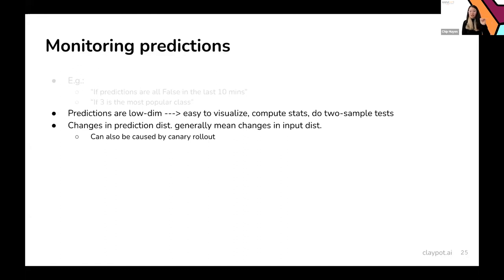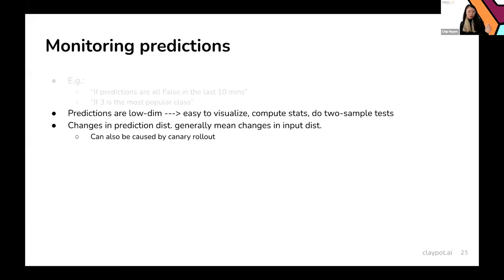Keep in mind that prediction distribution shifts can also be caused by canary rollouts — when you gradually roll out a new model to more users, starting at 1%, then 10%, then 90%. As the new model slowly replaces the existing one, you might see distribution shift. In this case, you still want to investigate, because if the new model produces significantly different predictions from the existing model, there might be a problem and you should look into it.